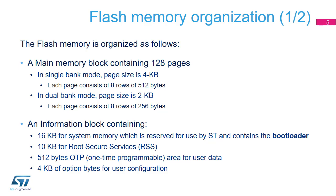In addition to the main flash memory, the STM32L5 supports a system memory of 32 kilobytes containing the ST bootloader, used to reprogram the flash memory through USART, USB in DFU mode, I2C or SPI. There is also 10 kilobytes for root secure services, and 512 bytes of OTP memory to store user data that must not be erased or modified. If 1 bit is 0, the entire double word can no longer be written even with the value 0. Additionally, 4 kilobytes of option bytes contain default settings to configure IPs in the system on chip.